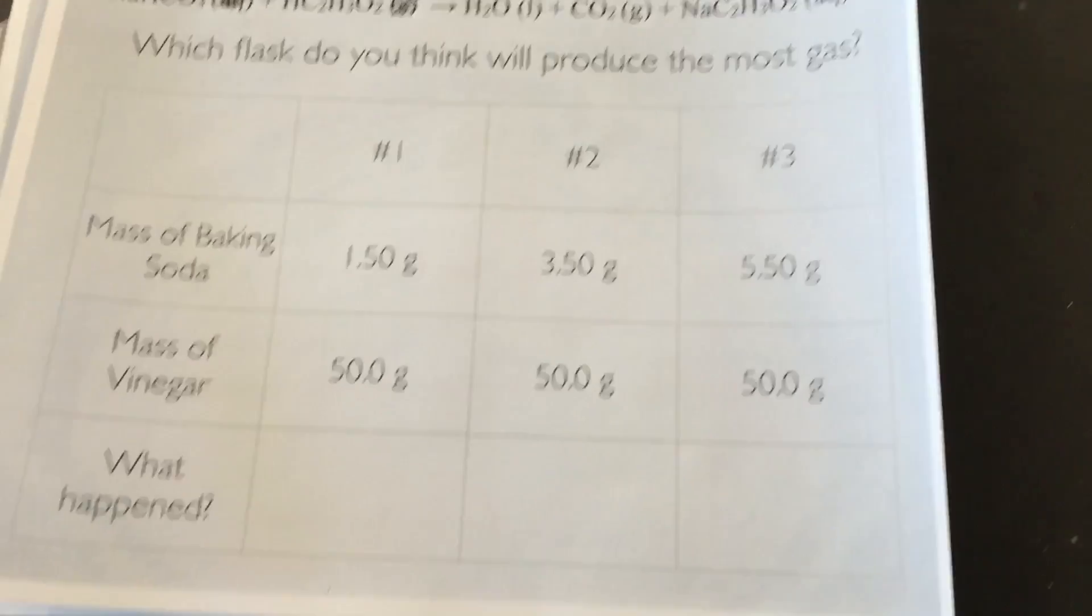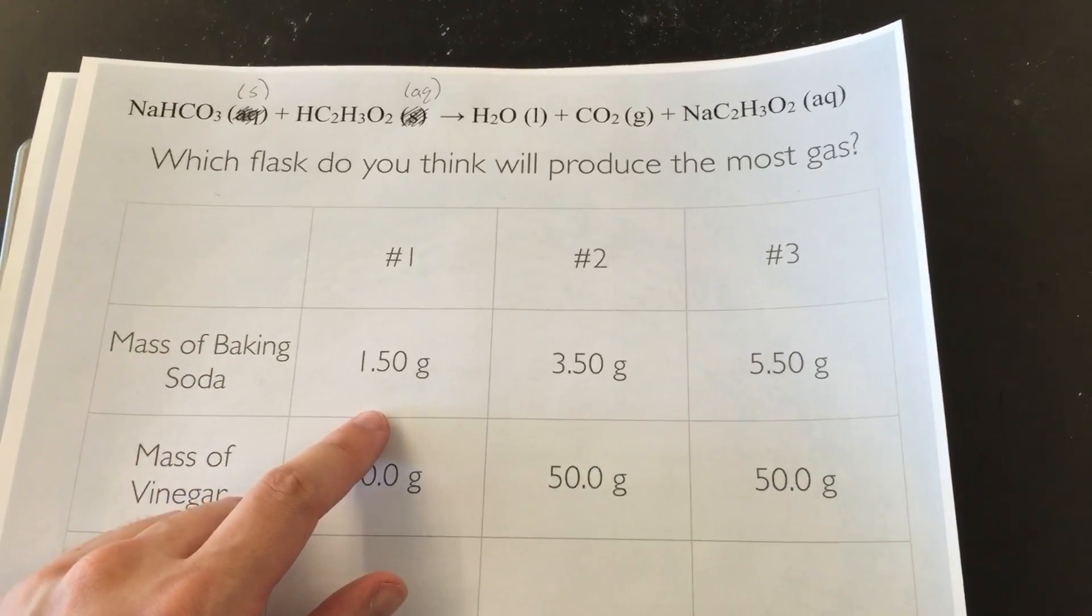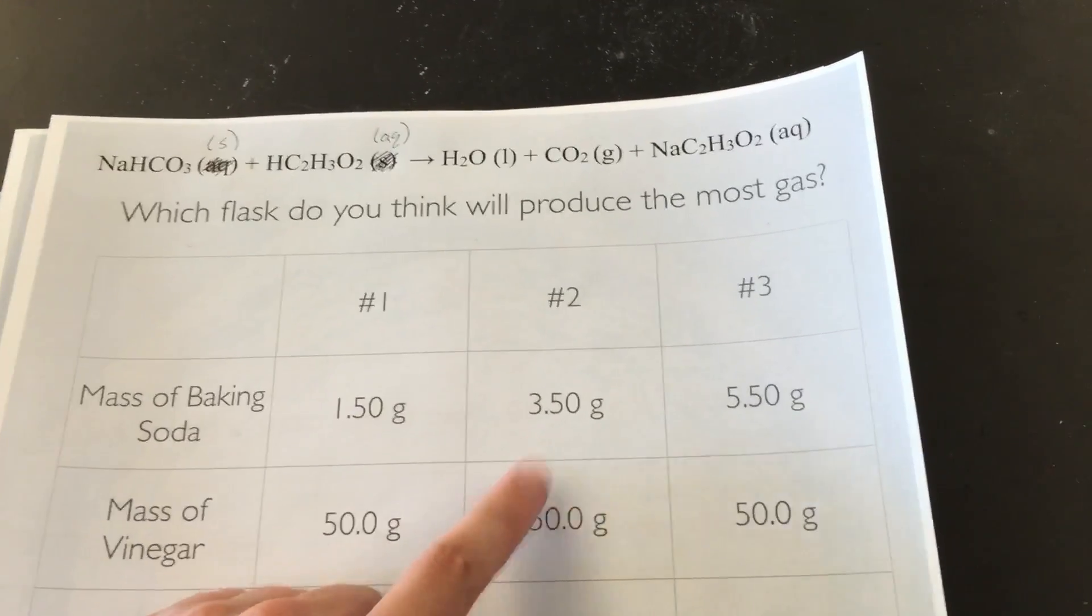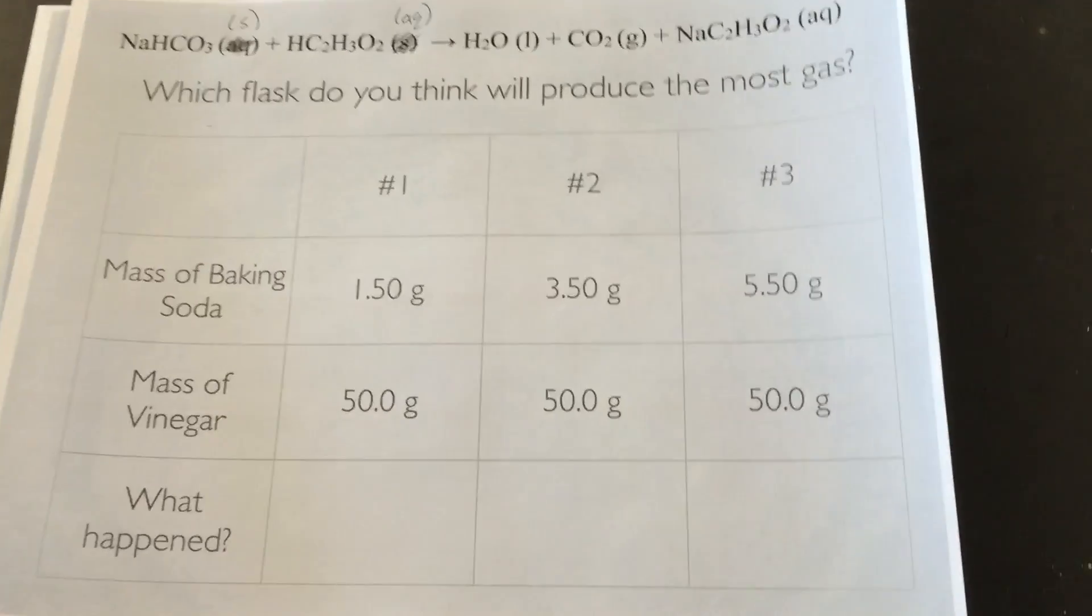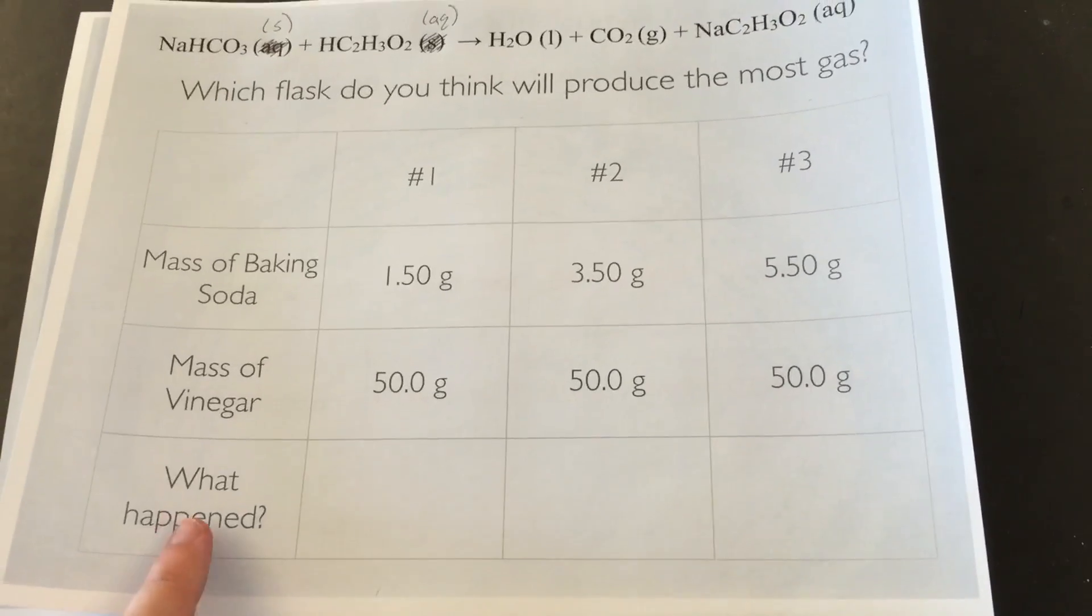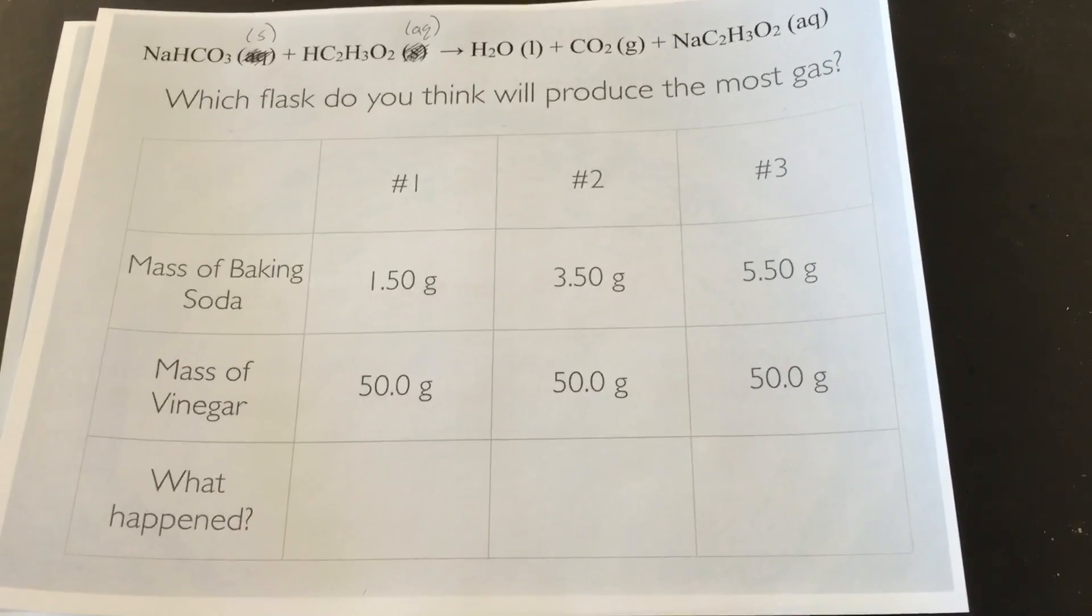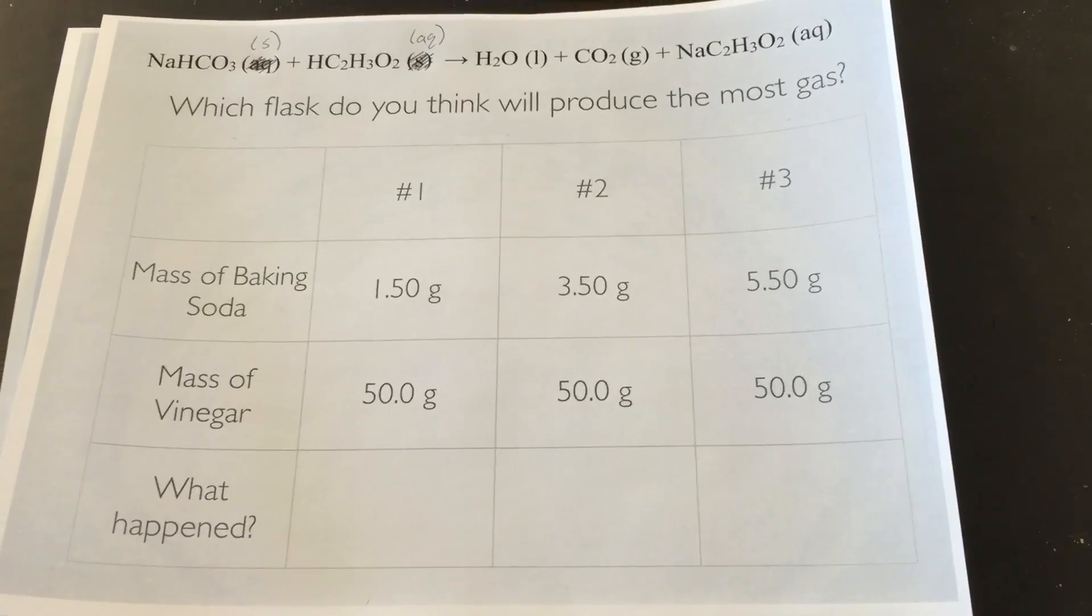The variable that we're going to be changing here is the mass of baking soda. So I have 1.5 grams in the first container, 3.5 in the second and then 5.5 in the third. So construct a table that looks like this and then this is where you're going to be recording your observations. You can pause the video if you need to construct this table but we're going to be looking at our reaction now.